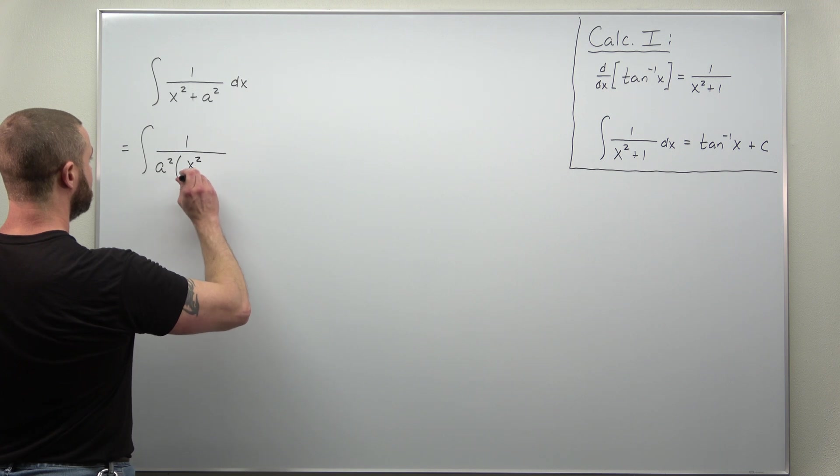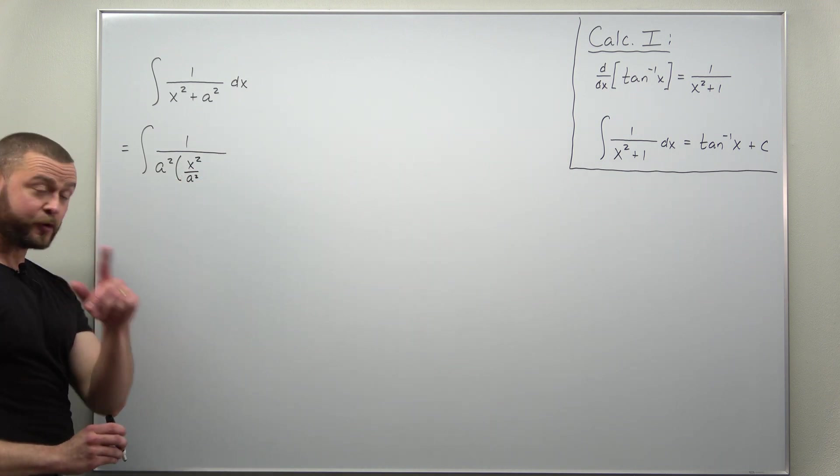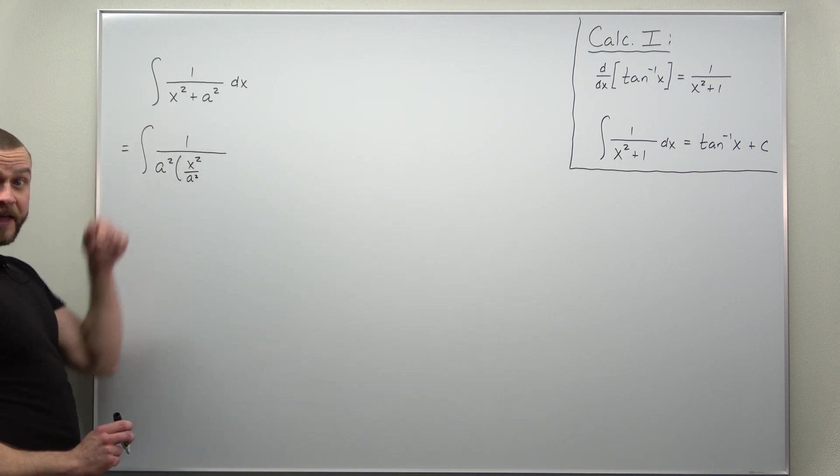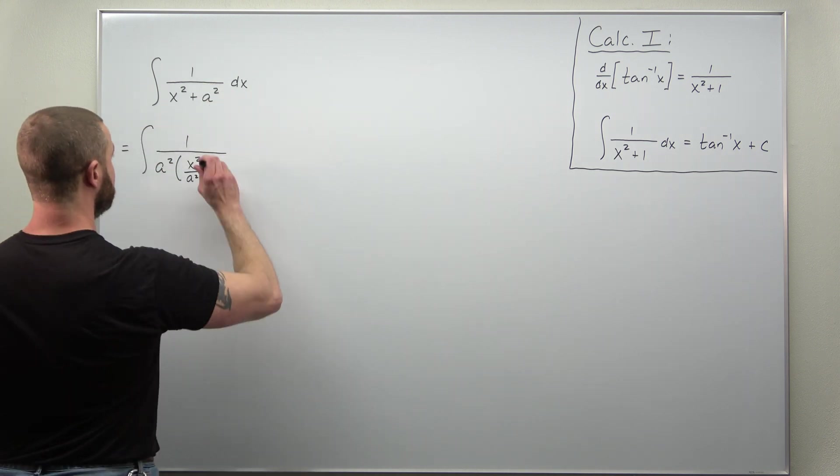Notice if you distribute that back in, the a squared cancel, leaving you with x squared, which is okay. And we factored out a squared, so we're left with 1.